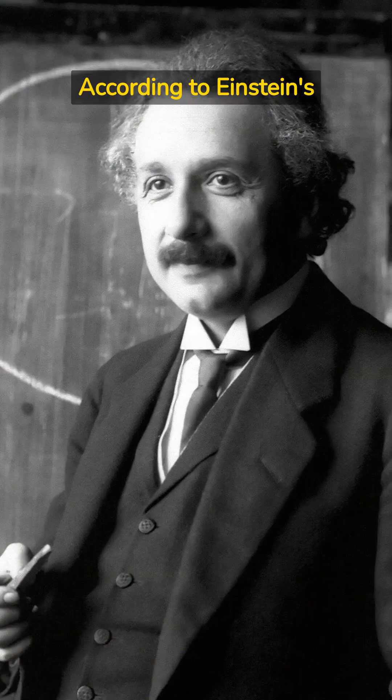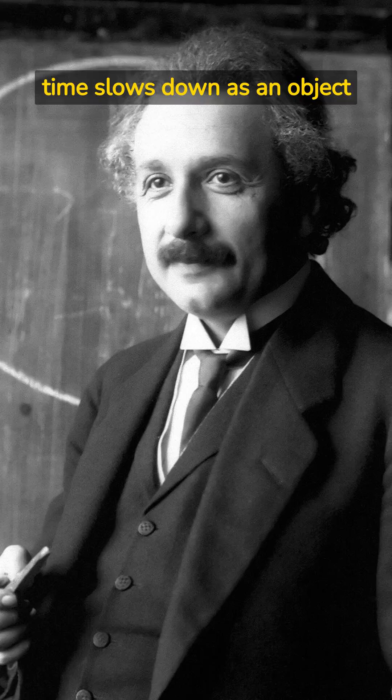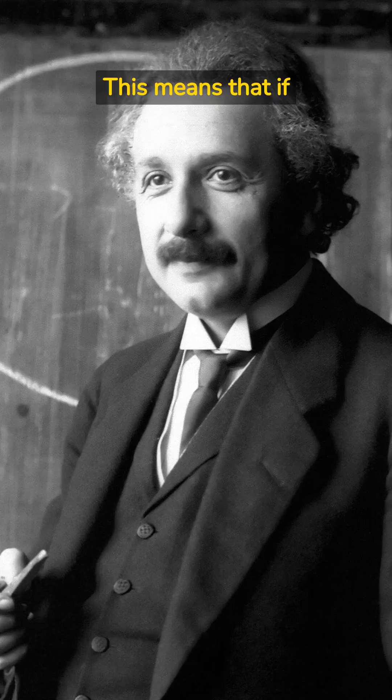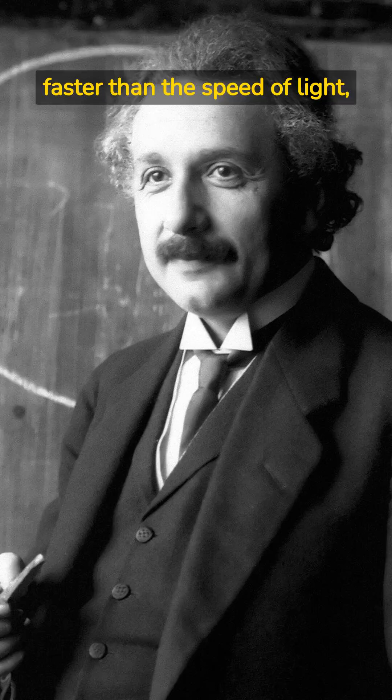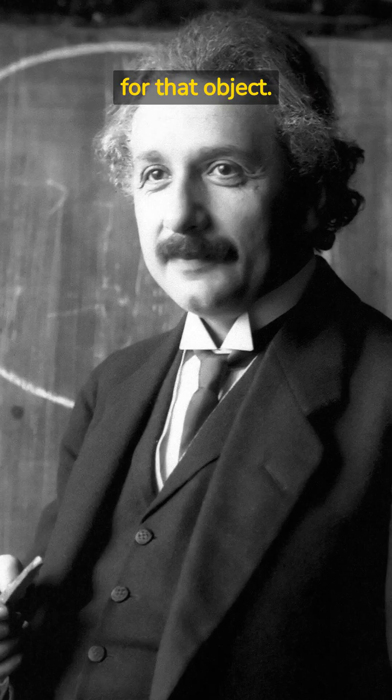According to Einstein's theory of special relativity, time slows down as an object approaches the speed of light. This means that if an object were able to travel faster than the speed of light, time would actually move backwards for that object.